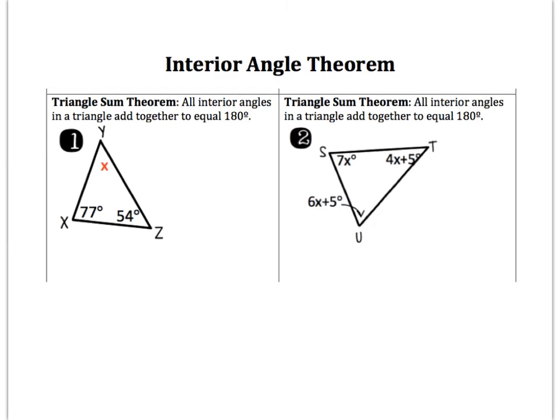Looking at the second flap of your foldable, it's talking about the interior angle theorem, and this is specifically for triangles. In every single triangle, no matter if it's equilateral, a right triangle, isosceles, big, small, whatever, all triangles have an interior angle sum of 180 degrees. Every single triangle. If you need to highlight that or star it, do something to make that 180 stand out to you.